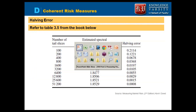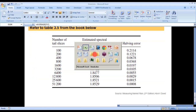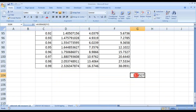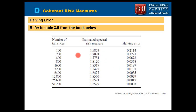We have seen this in front of our eyes: with 100 slices we get exactly what the book estimated for the risk measure.